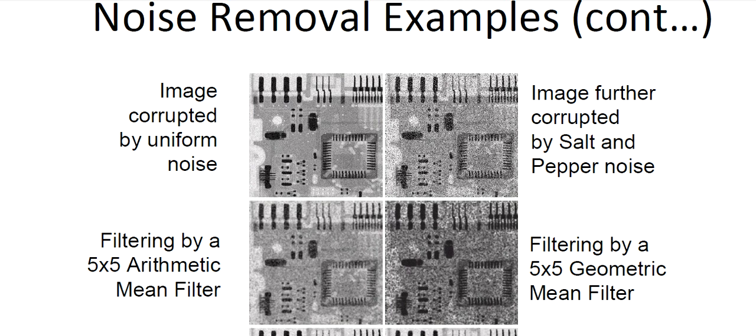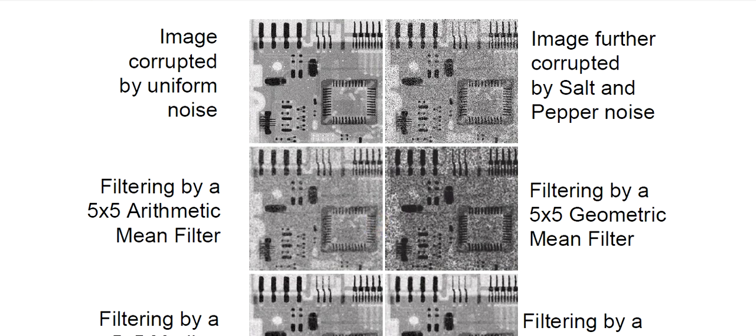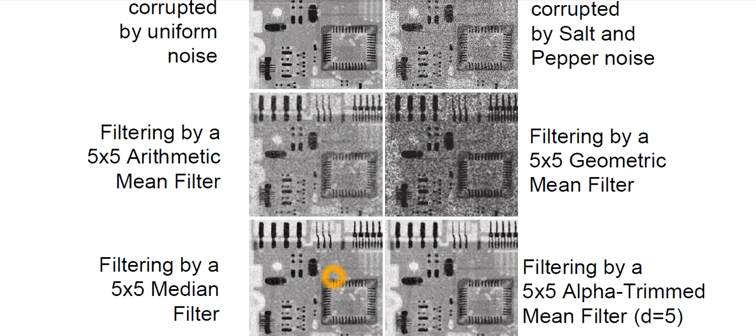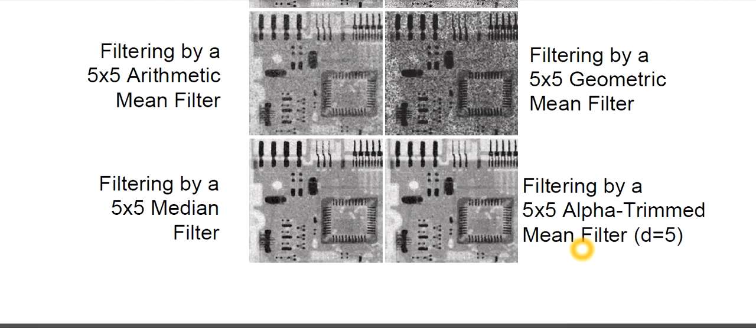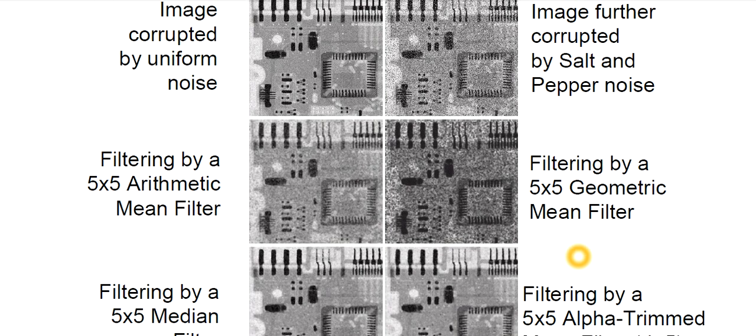Then we have one image corrupted by uniform noise, then again corrupted by salt and pepper noise. First filter it by arithmetic mean filter. Then, that image is being filtered by 5×5 geometric mean filter. That's this arithmetic mean and geometric mean we have discussed. So you see the output. Now, that image is being filtered by median filter. You will see the difference in the output. You see that median filter output is better. Again, we try to filter it through a 5×5 alpha trimmed mean filter with d is equal to 5. That's output is far better. You will see the difference in the output.